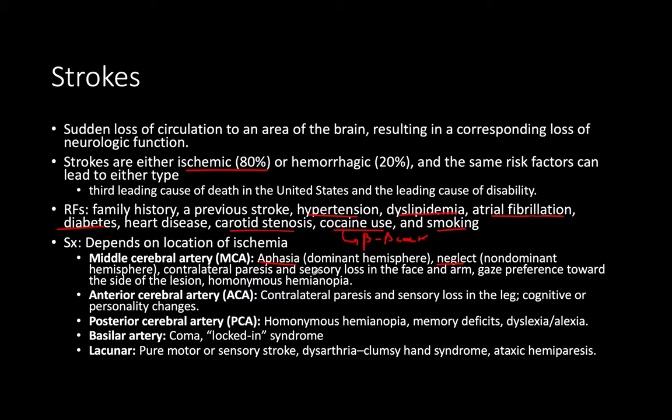With MCA stroke: contralateral paresis, sensory loss in face and arm, gaze preference towards the side of the lesion, and homonymous hemianopia — missing the same area of vision on both eyes, for example the right side of vision on both eyes, versus different sides on each eye.